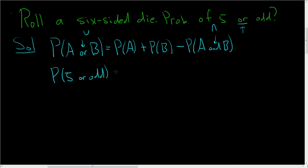So A is five and B is odd. So this is P of five plus P of odd minus P of five and odd.